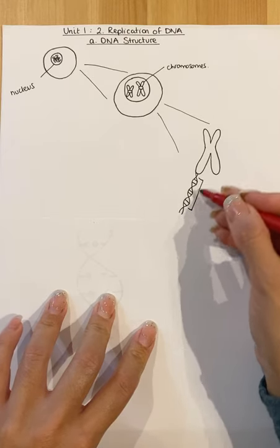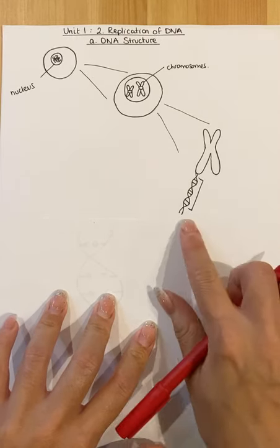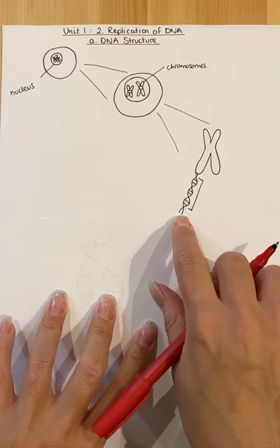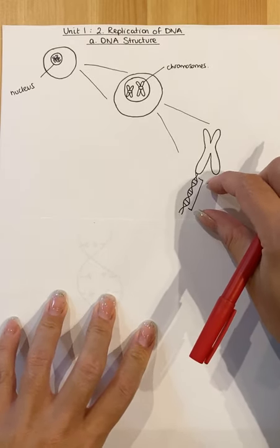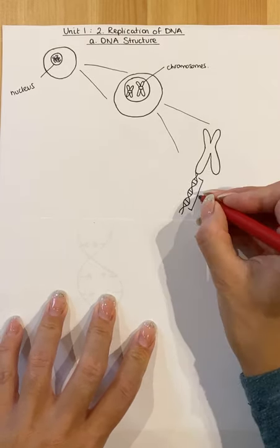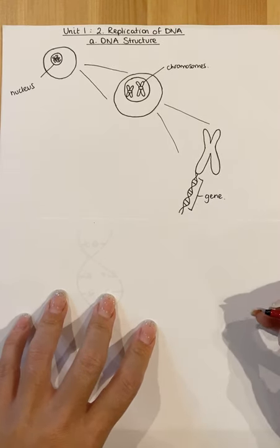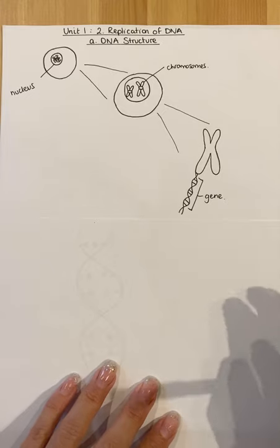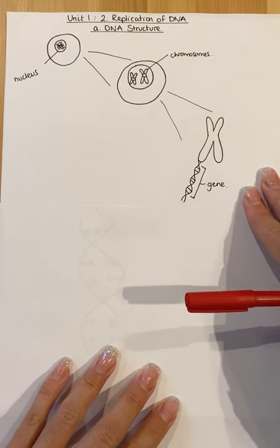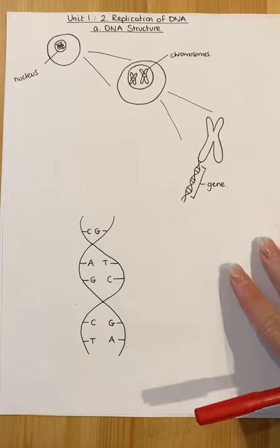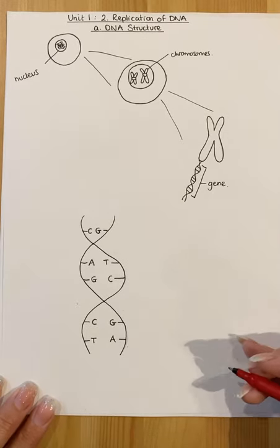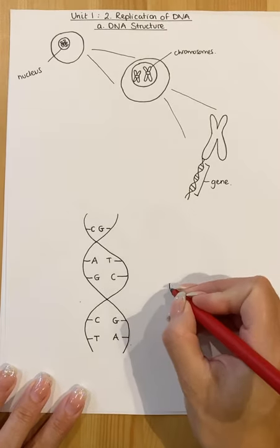You untwist it and you see this structure. This structure here is a DNA double helix. And a short section of DNA is called a gene. So far this is all National 5 revision. When we look at a gene and zoom in, we get a molecule that looks like this, a DNA double helix.